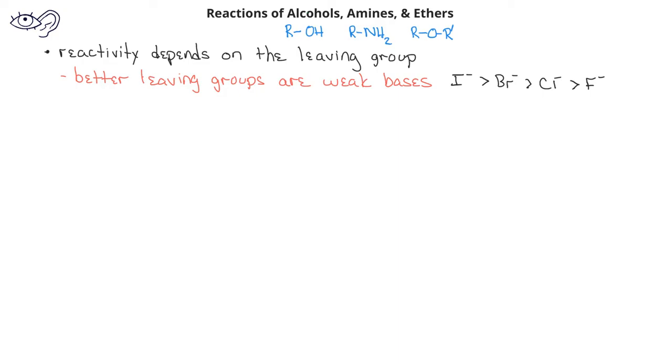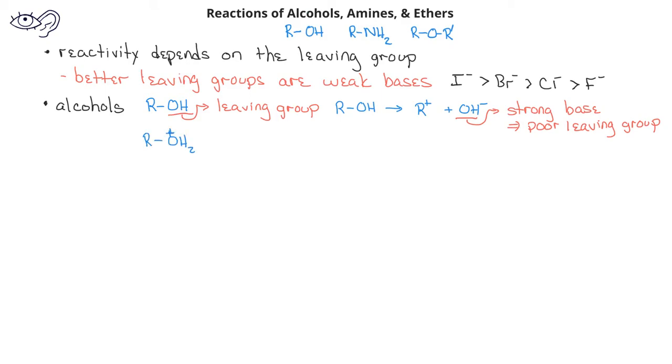If we have an alcohol functional group, the OH or hydroxyl group can act as the leaving group. However, if it were to leave, we would have OH minus, which is a strong base, so therefore the OH minus is a poor leaving group. However, if we were to first protonate the alcohol, then the leaving group would become H2O. Since H2O is a weak base, it's a much better leaving group than the hydroxyl group by itself.